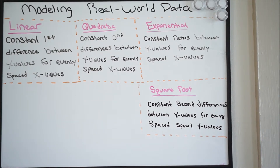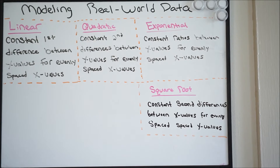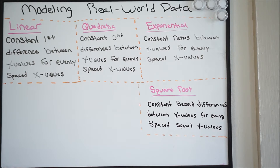Alright guys, so today we're going to be talking about modeling real world data — how we can take data and determine if a linear, quadratic, exponential, or square root function is going to be the best fit. Much of this can be done on your graphing calculator. You can do a regression analysis, and you typically just pick the regression that has the best r-squared value, or the value closest to 100.